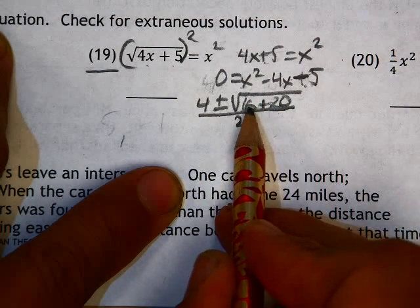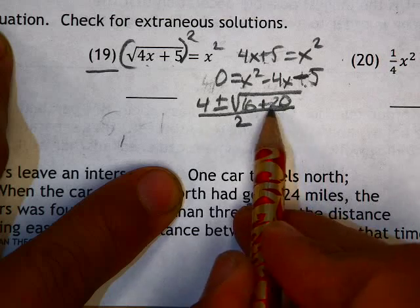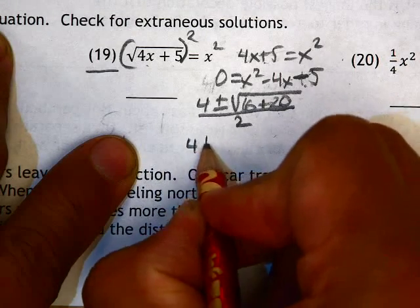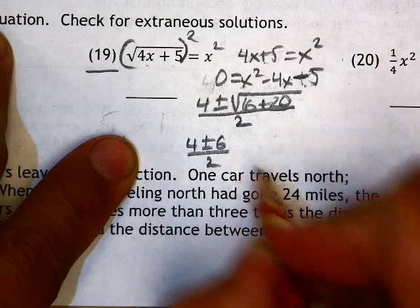So this gives me the square root of 36. The square root of 36 is 6. So my answer is 4 plus or minus 6, all over 2.